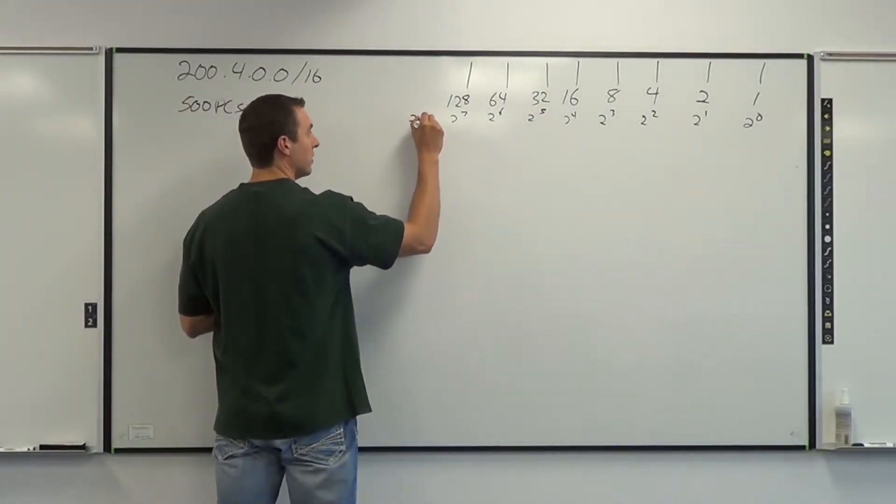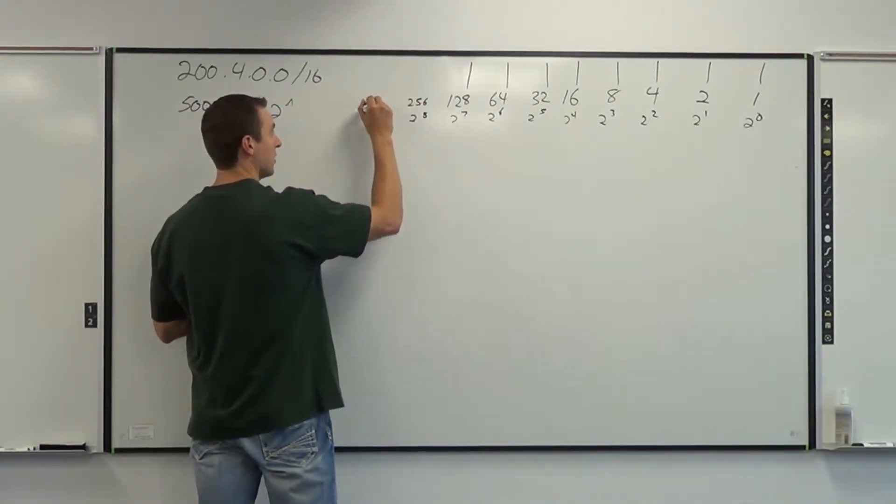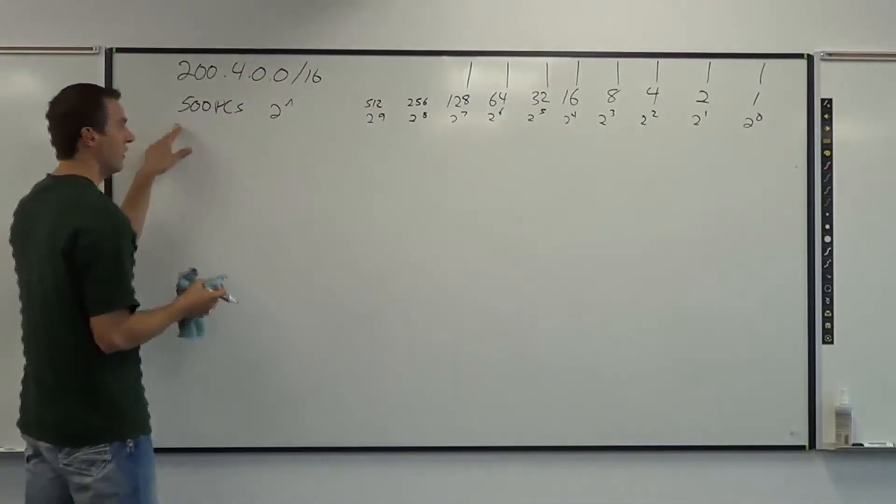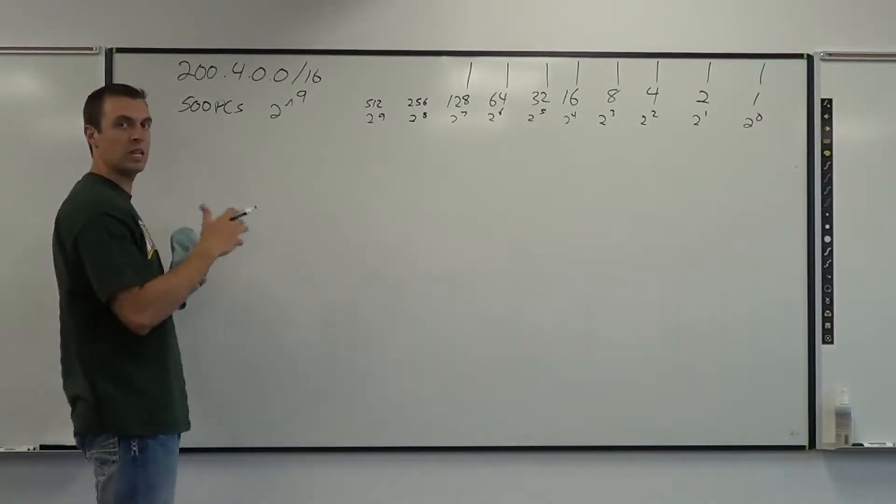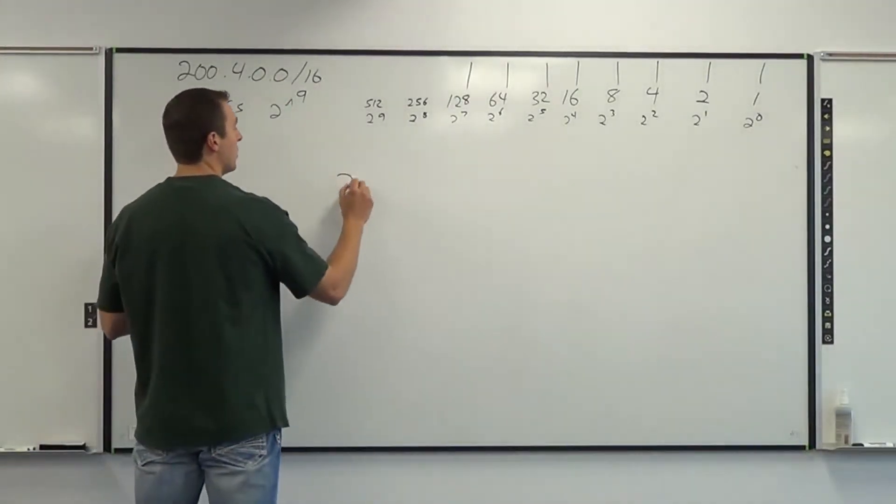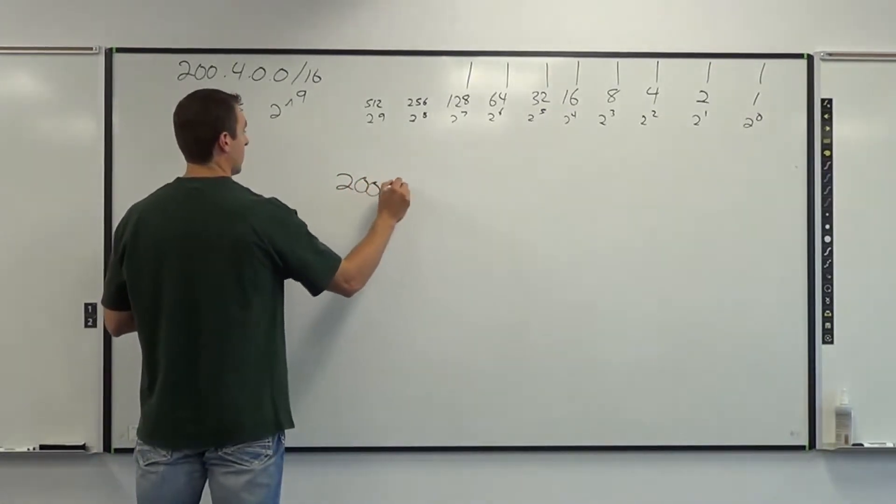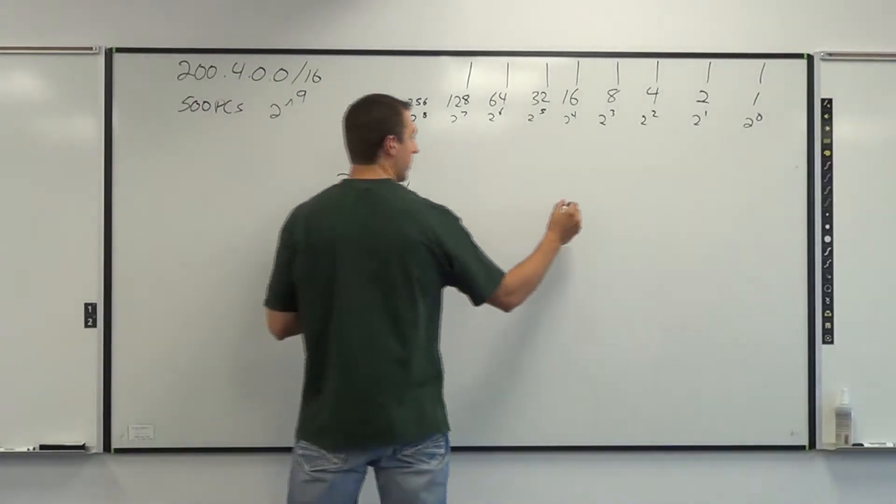2 to the 8th is 256. Again, I double as I go to the left. 2 to the 9th is 512. So for 500, I would choose 2 to the 9th. That 9 is telling me 9 zeros right-hand side. So I draw my IP address with those 9 zeros on the right-hand side. Here they are.